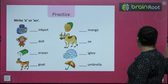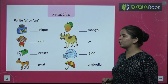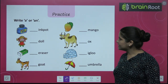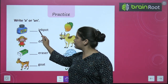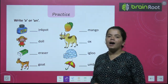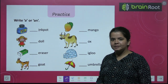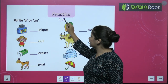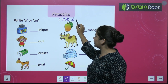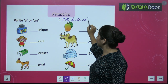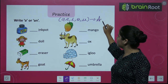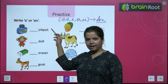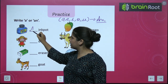Now we will do a practice in which we have to write using A and An. First, what is the blank: ink pot? I is a vowel. We have A, E, I, O, U — with vowels we always use An. So here I is a vowel, so we use An.